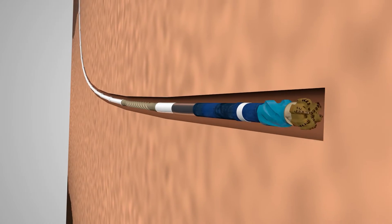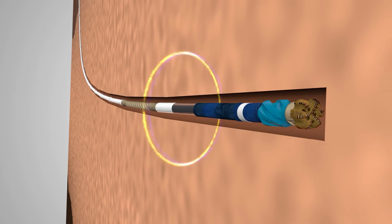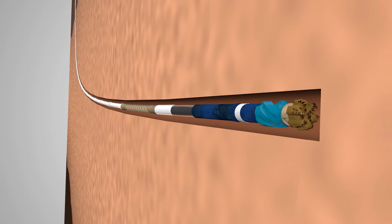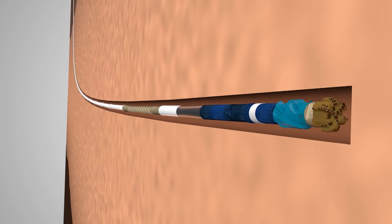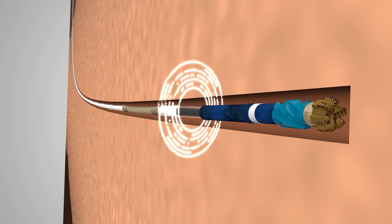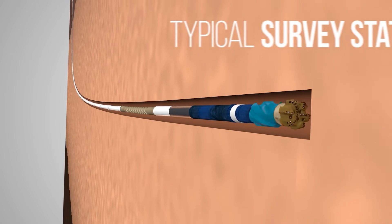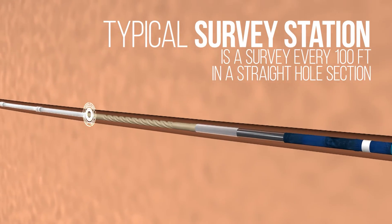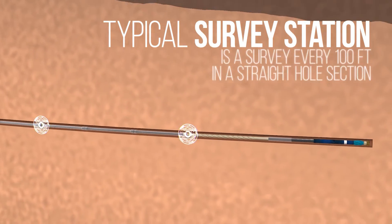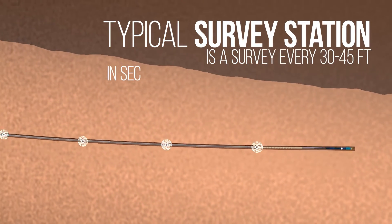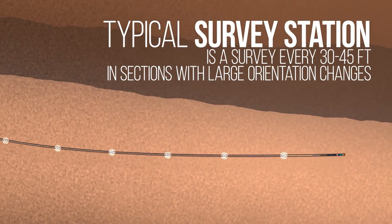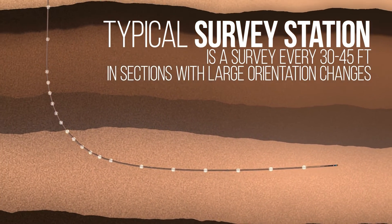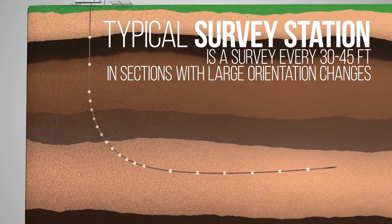Again, the MWD surveys along the well path lead to the determination of its position, with the goal being to position the well according to its well plan. The typical MWD survey procedure is a survey every 100 feet in straight hole sections, and every 30 to 45 feet in sections with large orientation changes, such as the curved section of a well.